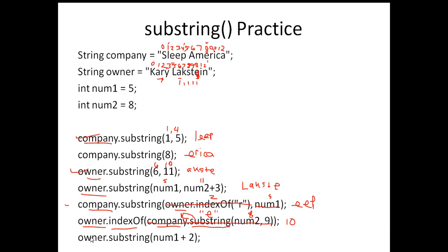The last one: owner.substring(num1 + 2). Num1 is 5, so 5 plus 2 is 7. It becomes owner.substring(7). With a single parameter, it starts at position 7 and goes to the end. Position 7 in owner is K, and going to the end gives K, S, T, E, I, N.